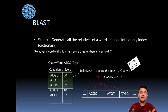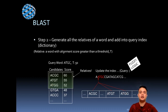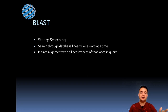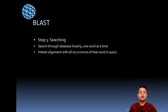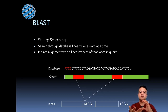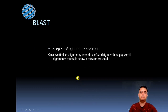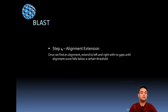Once you find the relatives, you update the query index to include all related words alongside the original. So ATGC now includes ACGC, ATGT, and ATGG as well. Step three is to search the database directly — initiating alignment with all occurrences of that word. You search the database against the query linearly and wherever a match occurs, an alignment forms. For example, if ATCG in the query matches ATCG in the database, that match initiates an alignment, which leads to step four.